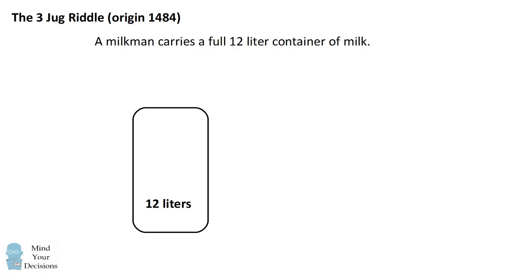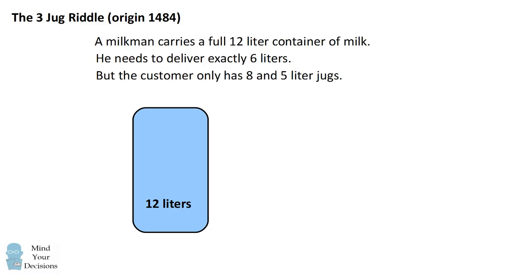Imagine a milkman carries a full 12-liter container of milk. He needs to deliver exactly 6 liters of milk to a customer, but the customer only has 8 and 5-liter jugs. Can he measure out exactly 6 liters for the customer while taking 6 liters for himself? He can obviously use all 3 containers in order to get this measurement.